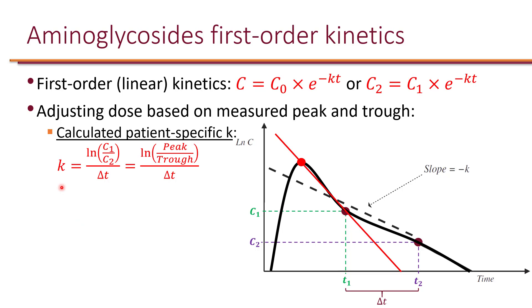Now, what's different about this k, as opposed to the k that we calculated previously, is that previously we used population data to estimate the k, so that's not very specific to the patient. But now, because we have two levels from the patient, this k is specific to the patient. So we call this individualized pharmacokinetics, as opposed to population-based kinetics.